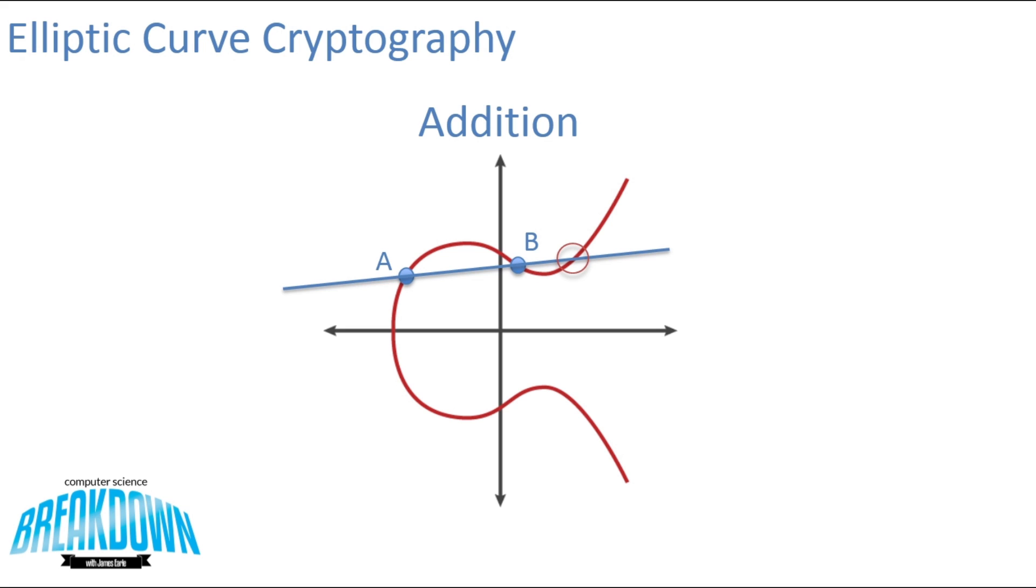From this third intersection point, we can draw a vertical line down, and across the x-axis, where it intercepts the curve again, is actually going to be the sum of the first two points. So here we've added a and b, and it's actually equal to the point c.